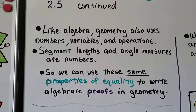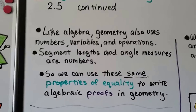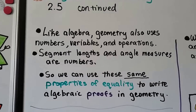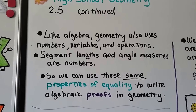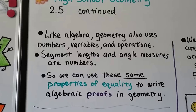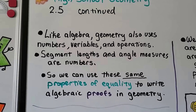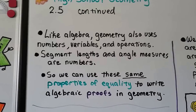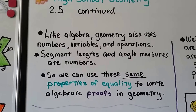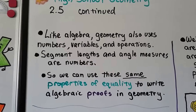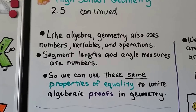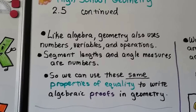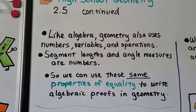Like algebra, geometry also uses numbers, variables, and operations. Segment lengths and angle measures are numbers, so we can use these same properties of equality to write algebraic proofs in geometry.